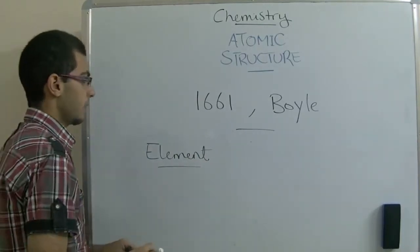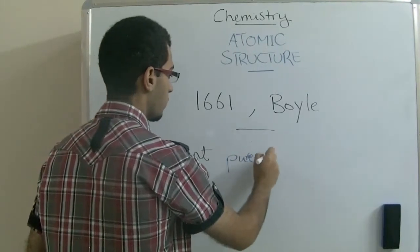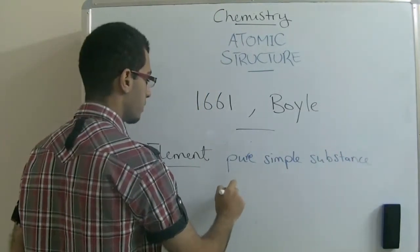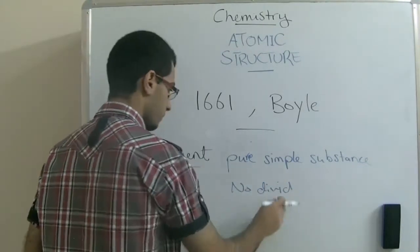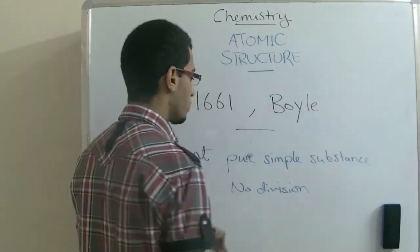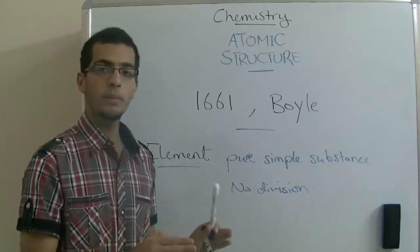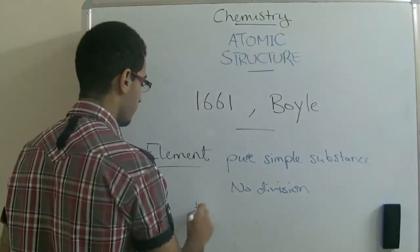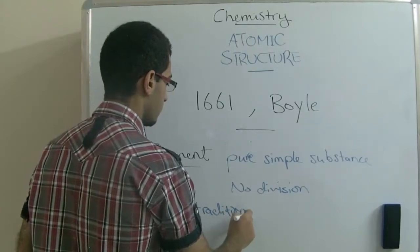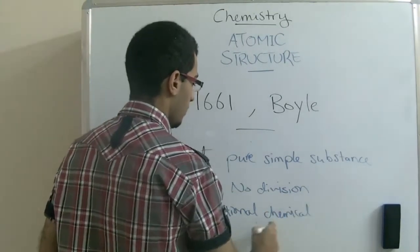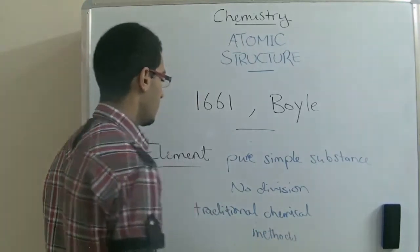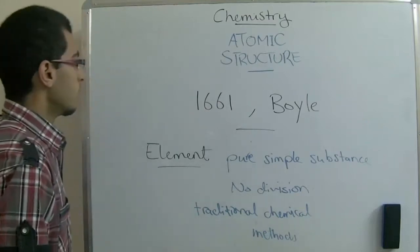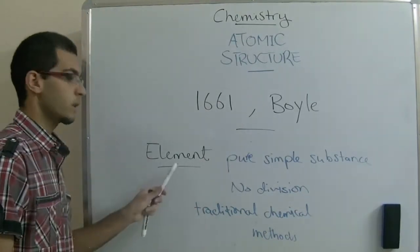He said that the element is a pure, simple substance that cannot be divided by traditional chemical methods into simpler form. So the element is the most simple form of matter. Boyle was the first person to put a definition for the element.